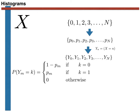Each auxiliary random variable has the Bernoulli probability mass function shown here. In other words, the probability that ym is equal to 1 is equal to the probability that capital X equals m. It is straightforward to show that the expectation of a Bernoulli random variable is equal to its parameter. Hence, the expectation of ym is equal to Pm. The fact that this expectation is equal to Pm is critical, as this is what we are going to use to estimate the probability mass function using the law of large numbers.